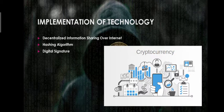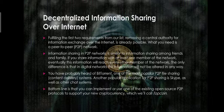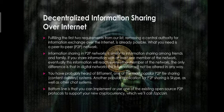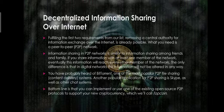Implementation of Technology on Cryptocurrency: Decentralized Information Sharing Over the Internet. Removing a central authority for information exchange over the internet is already possible. Information sharing in a P2P network is similar to sharing among friends and family. If you share information with at least one member of the network, eventually this information will reach each other member. The only difference is that in a digital network, this information will not be altered in any way.